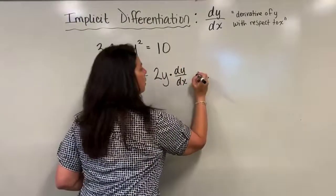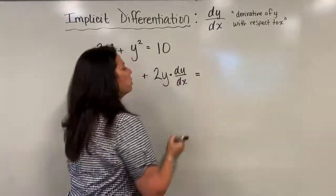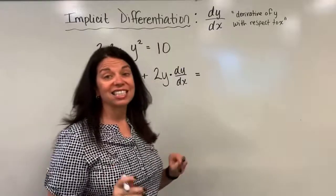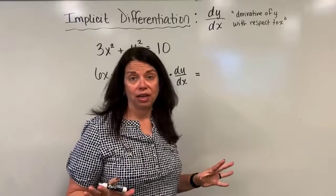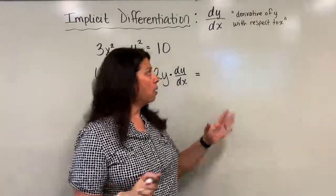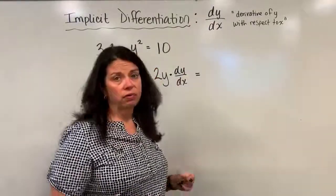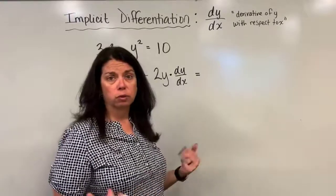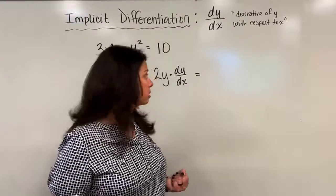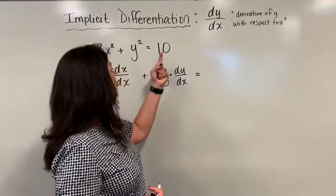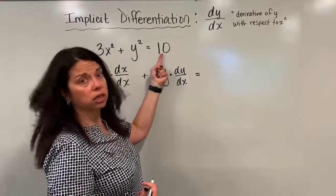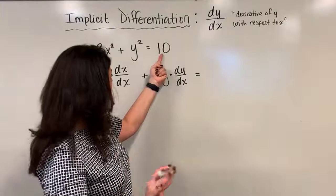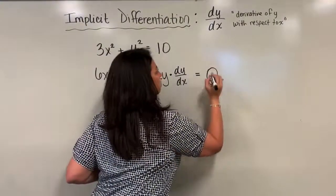Carrying on with my equals, I have just a constant 10 over here. And it really doesn't matter that we were taking the derivative of y with respect to x or x with respect to x. Here I'm going to just have the derivative of a constant, which is always zero.